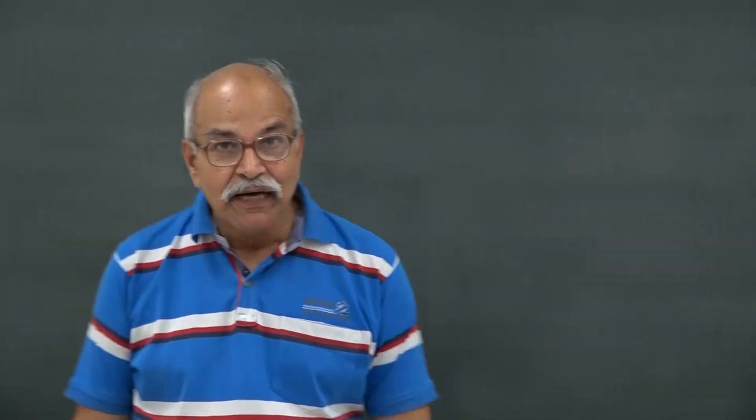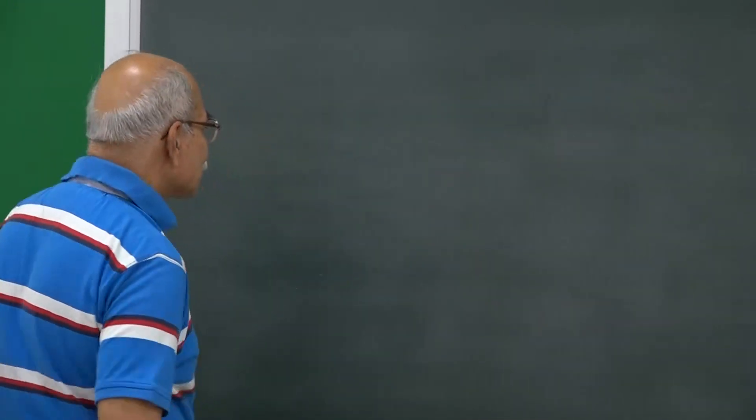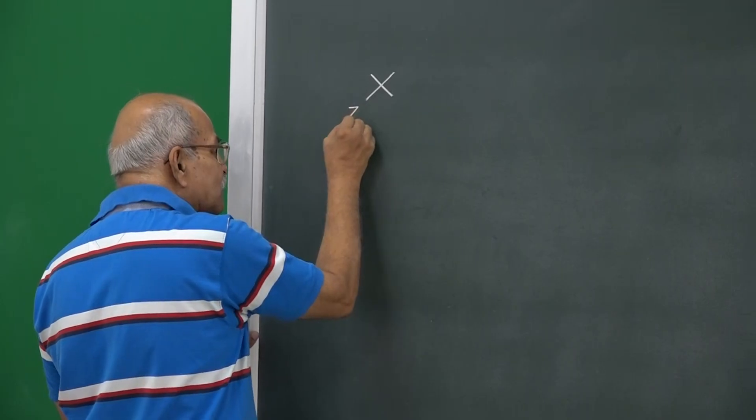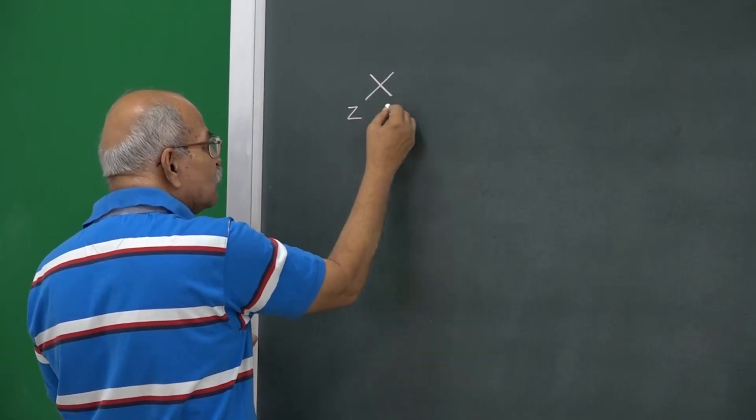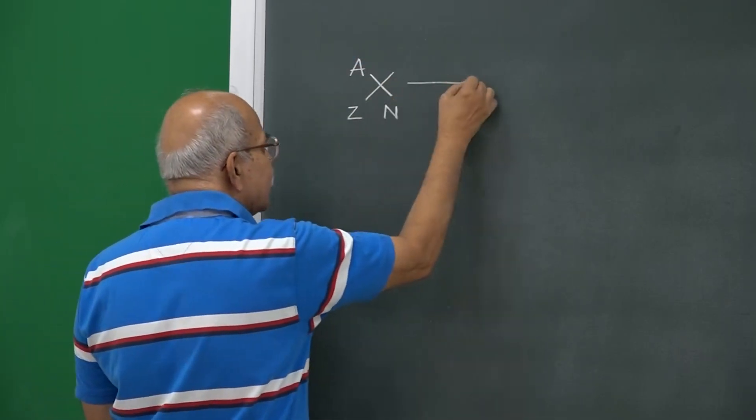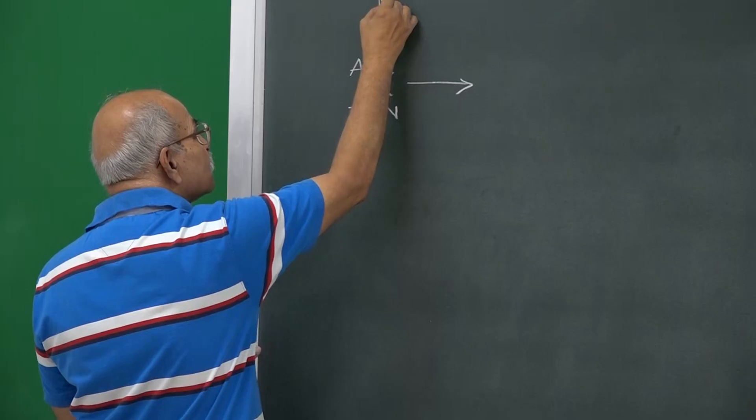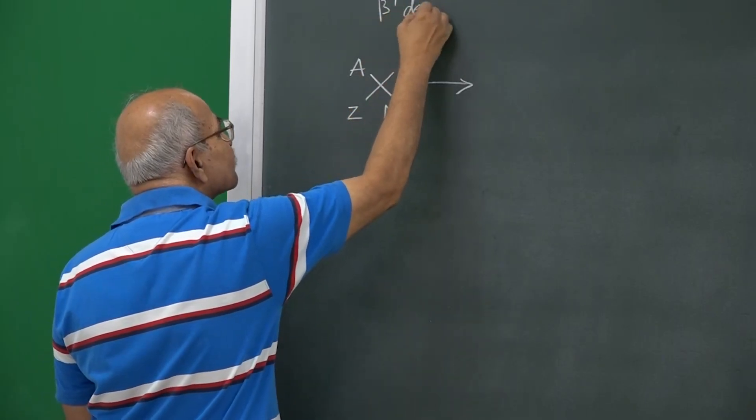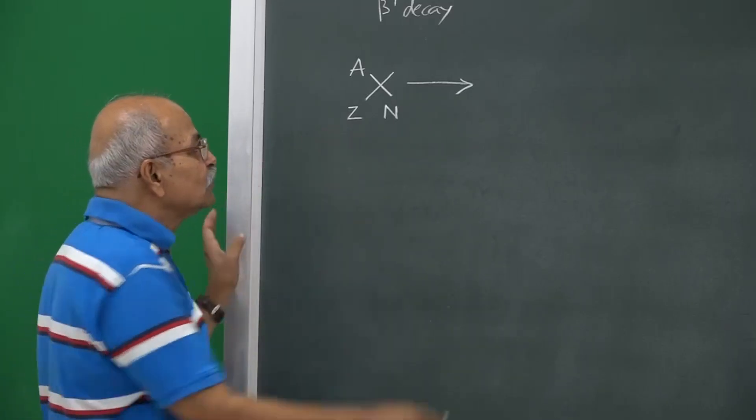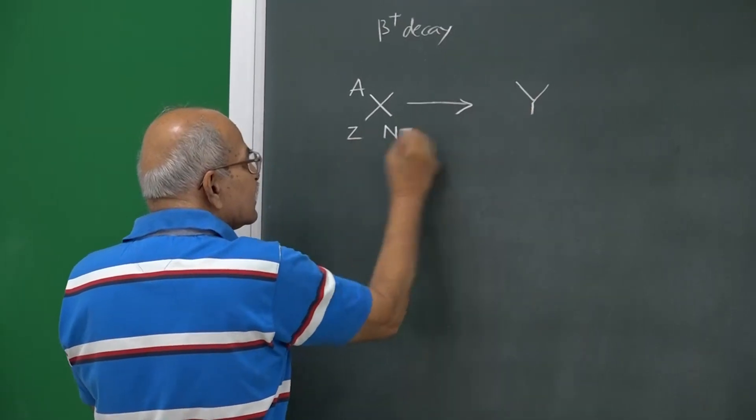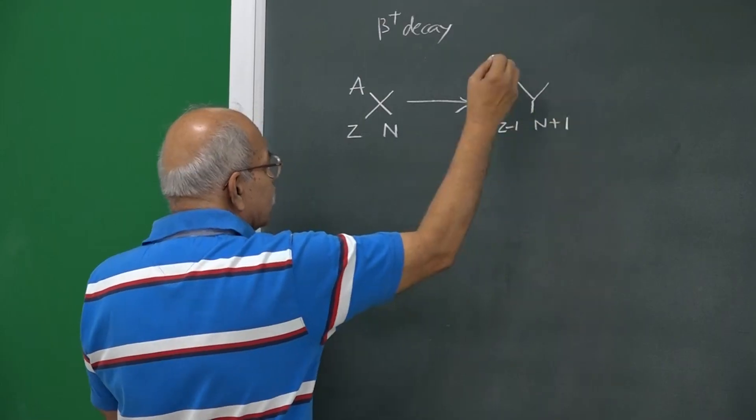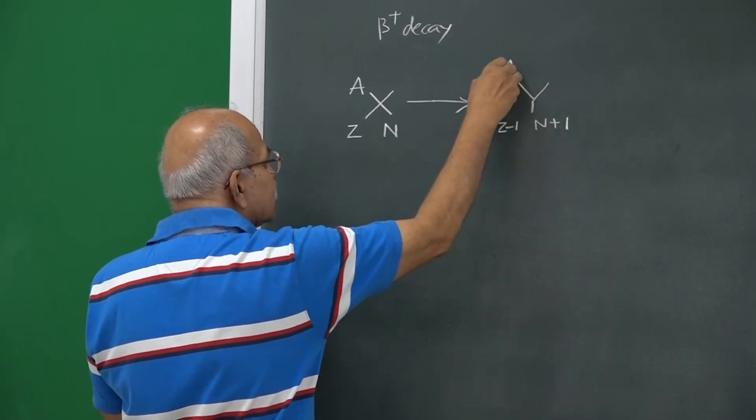In beta plus decay, you have a nucleus in which you have say Z protons and some neutrons, and the total is A, and then it decays. This is called beta plus decay. If proton is converted into neutron, you will have another nucleus and this will become Z minus 1 and this will become N plus 1, and then this remains capital A.